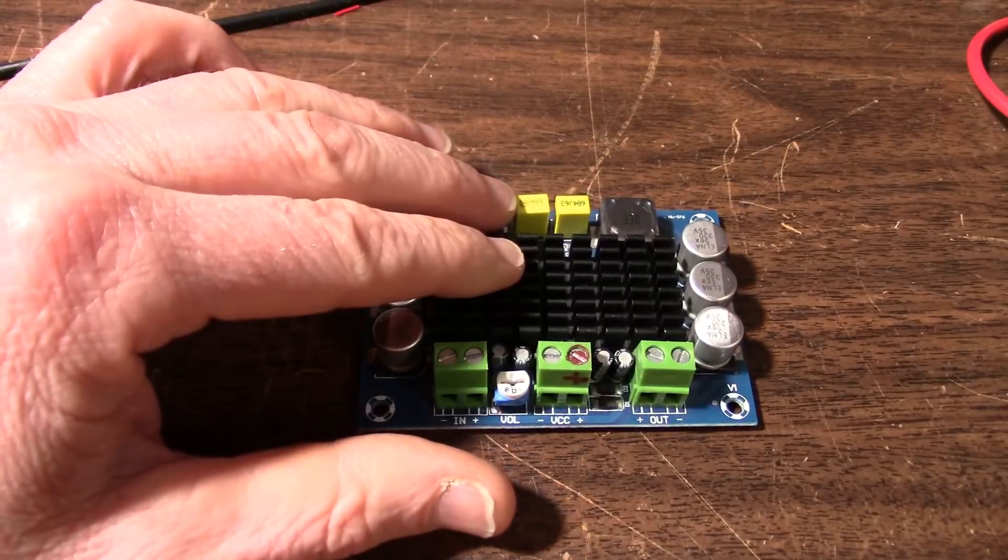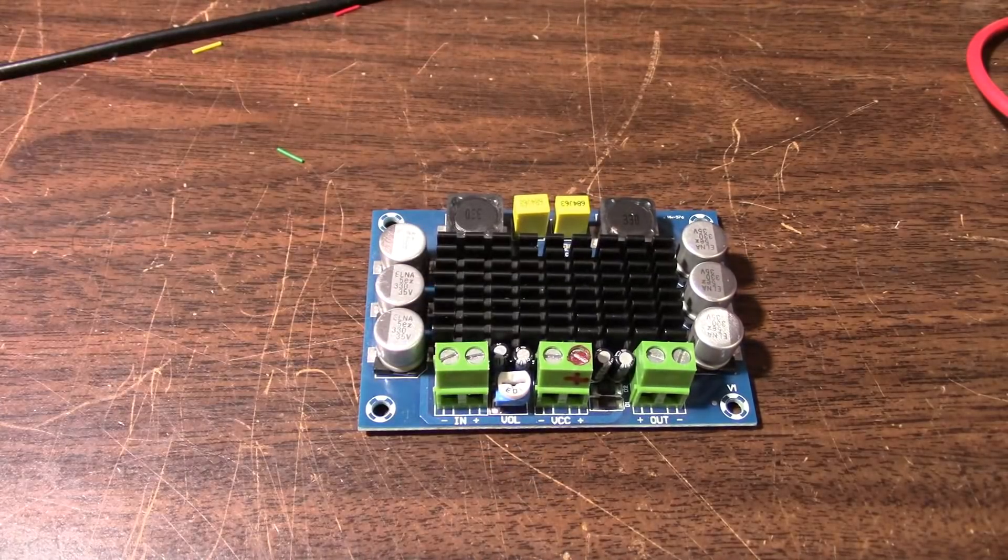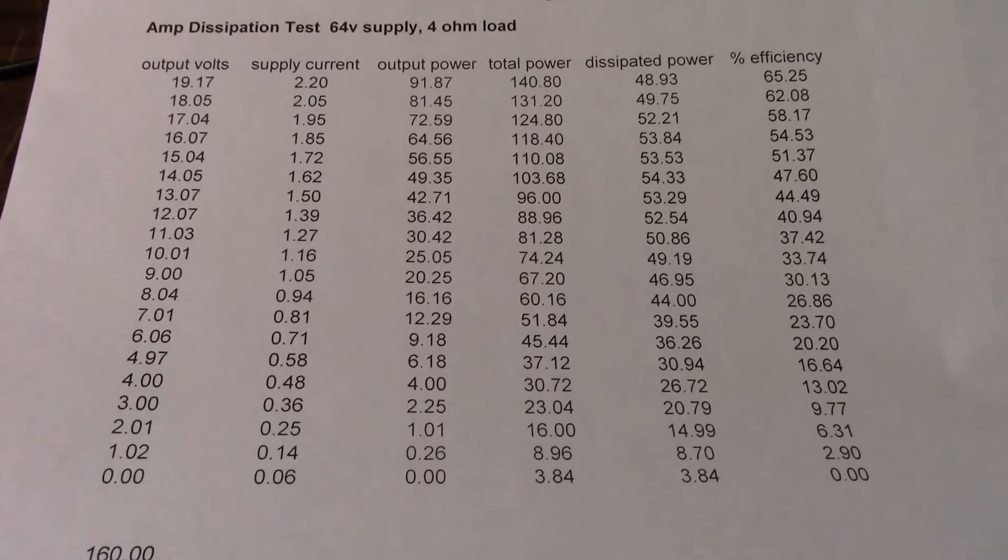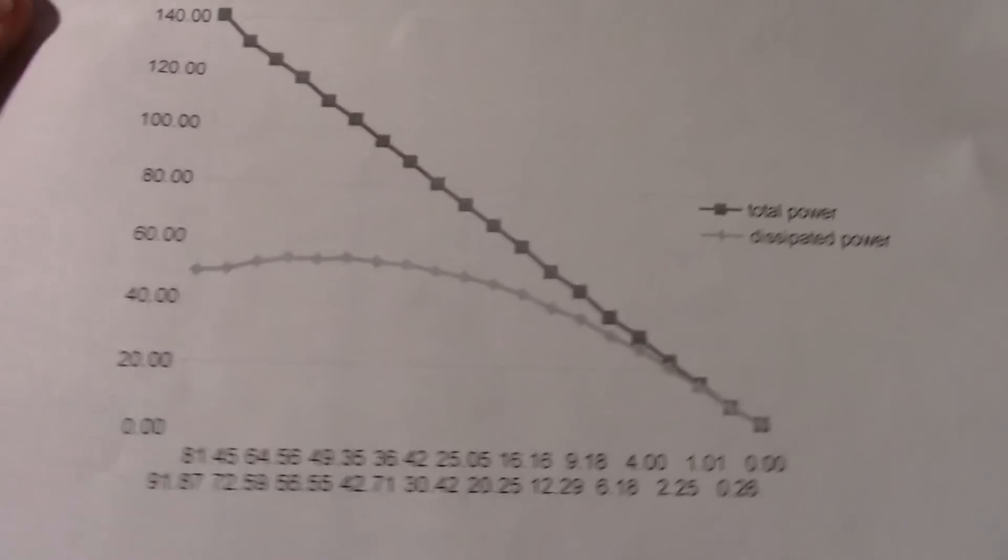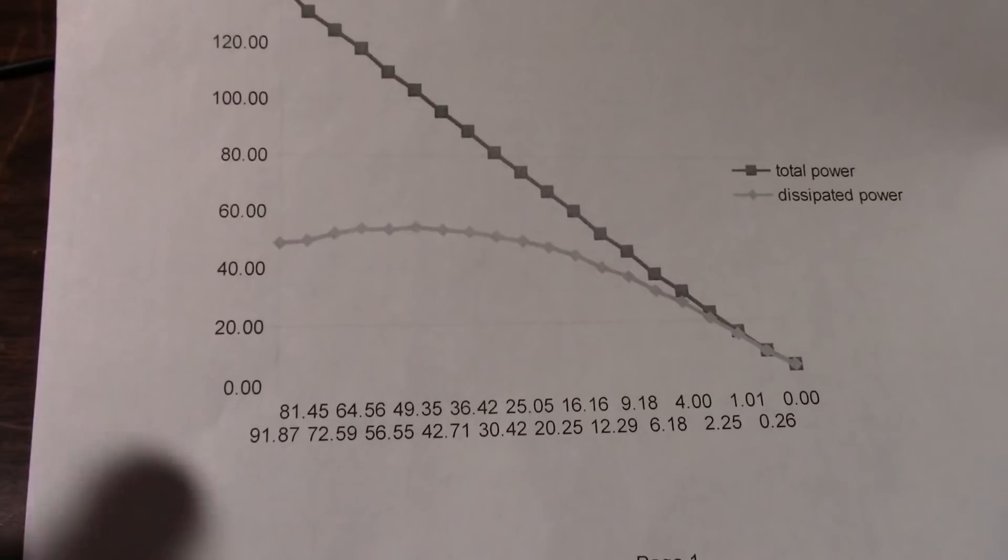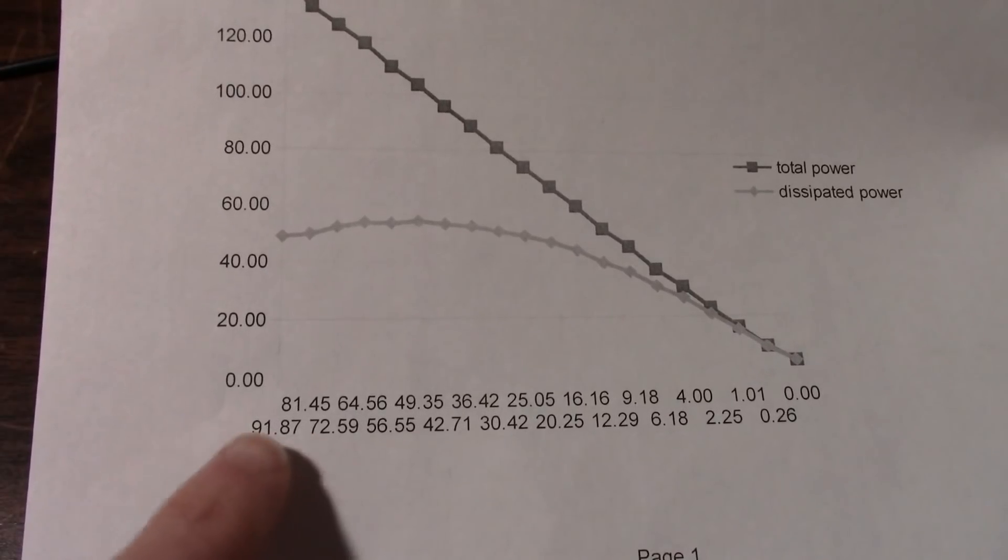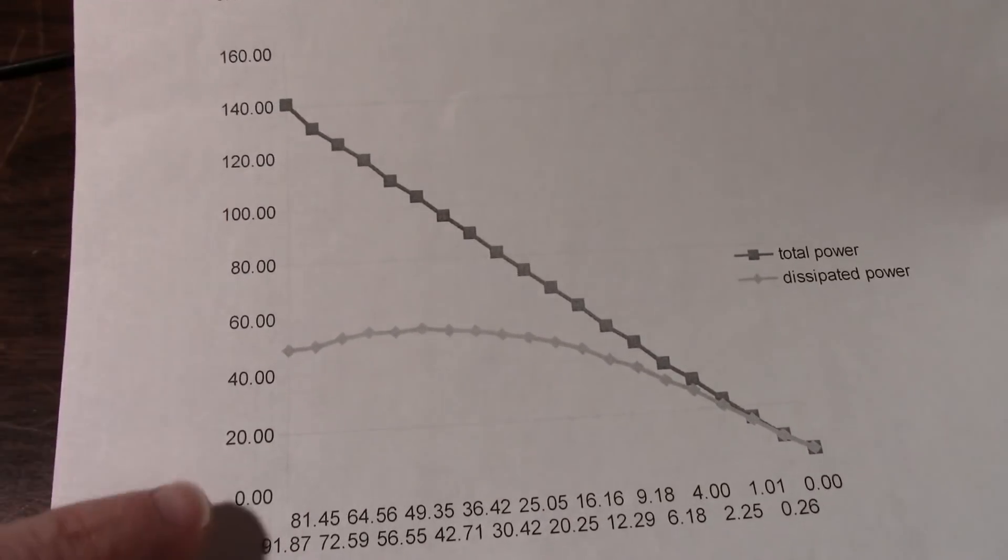This is a continuation from the last video where I tested a Class AB amplifier. I got a bunch of measurements and I graphed the output here. So this was the output power. This is just wattage here.